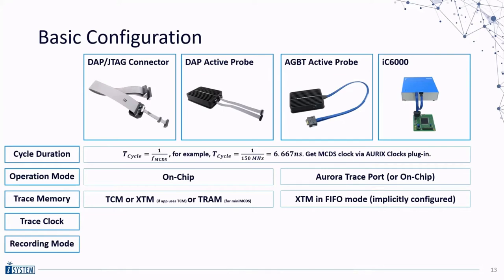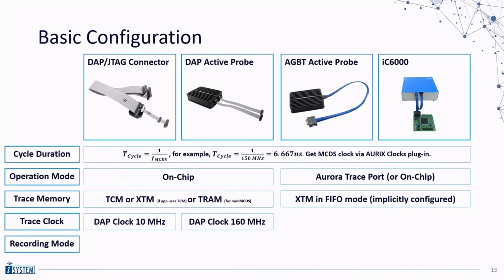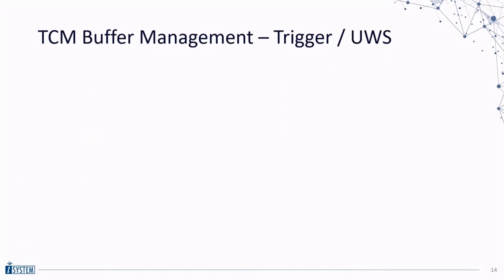Higher DAP clock frequencies enable a feature called Upload by Sampling. With a standard iSystem DAP adapter, 10 MHz is the maximum clock rate. However, with the Active Probe, you can utilize clock rates of up to 160 MHz — the maximum supported by the DAP protocol — if your PCB design permits. I recommend starting with 100 MHz and then trying higher frequencies if needed. The AGBT interface supports 1.25 and 2.5 gigabits per second. Start with 2.5 and if it doesn't work, try the lowest speed.